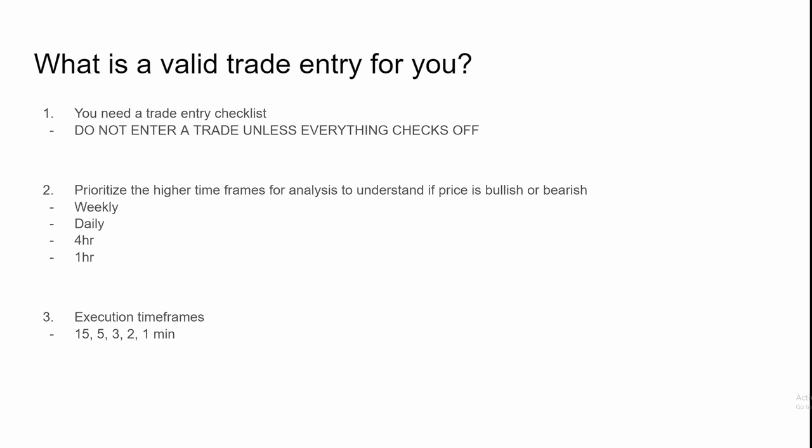The first thing you're going to need is a trade entry checklist — a list of things that need to happen in order for you to be confident enough to pull the trigger and hit that buy or sell button. If you do not have any confluence behind the trade you're about to take, you're going to be very nervous, probably cut your losses early, or cut a trade that is potentially a winner. Confidence is key; you need to be 100% confident and stack as much confluence as you can. You should not enter a trade unless everything checks off your list.